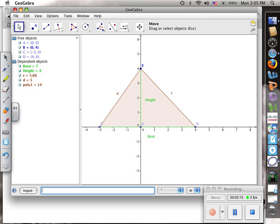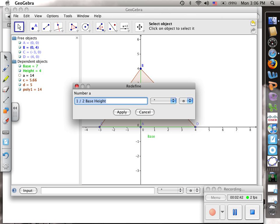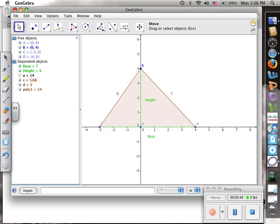Down at the bottom is an input bar where we can input functions. Let's type in one-half times the base, which is the name of that segment so it'll recognize that, times the height, and then hit return. It gives us our function. I can click on that and it shows my formula. Right now my formula matches with the computer's.